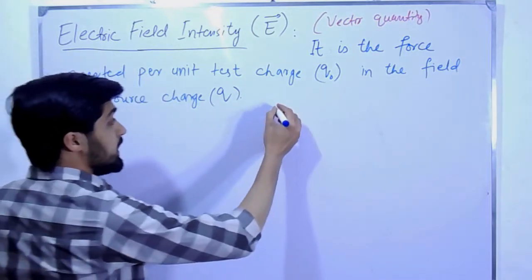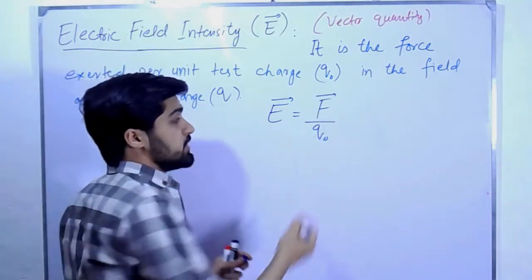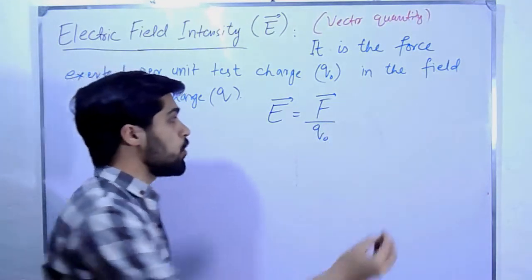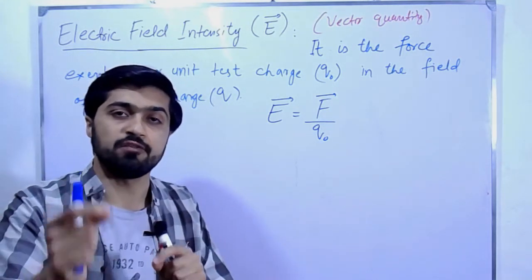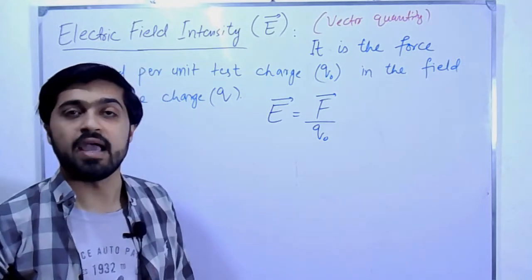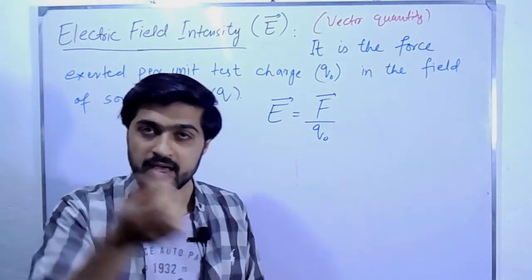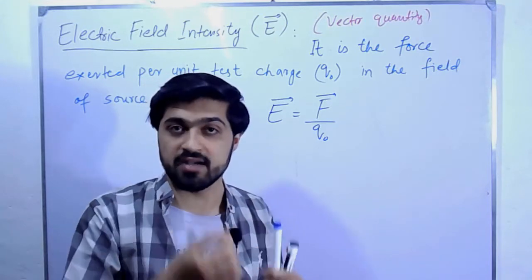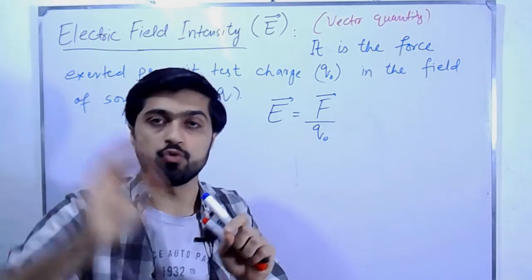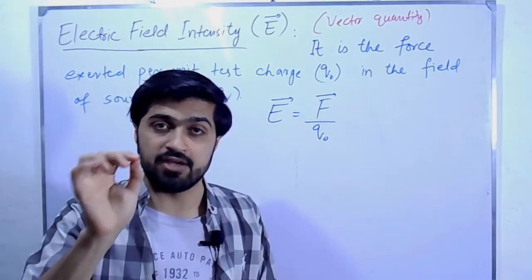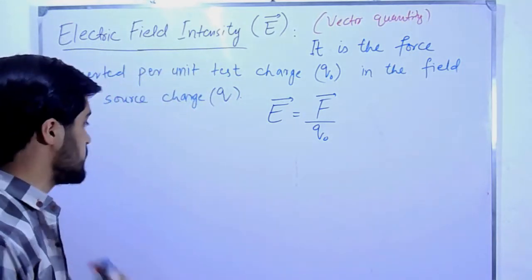So this is the electric field intensity. We define it as: the electric field intensity is a vector quantity defined as the force exerted by a source charge when a test charge is brought into its field at some point P. The direction of the electric field is the direction in which the test charge moves.